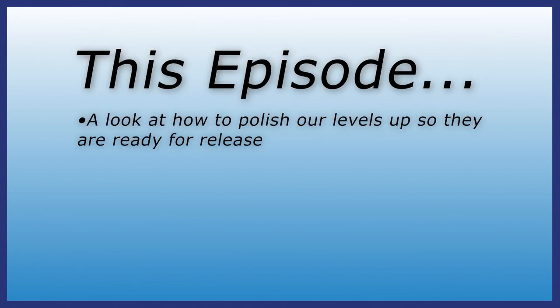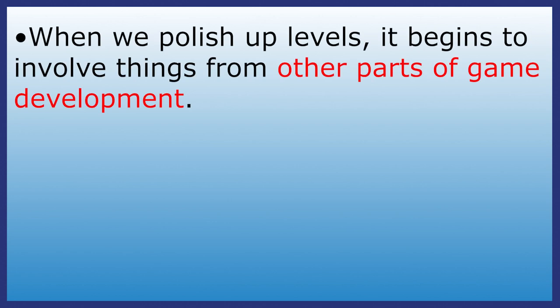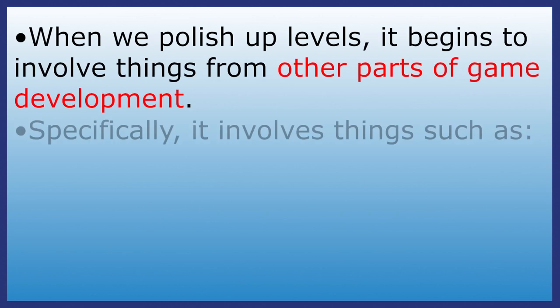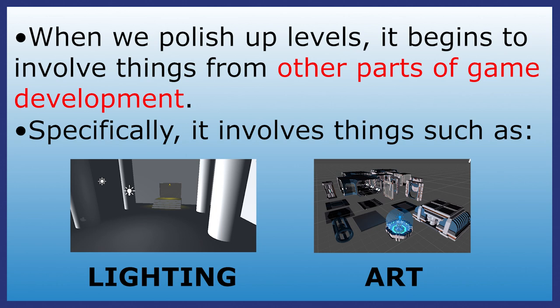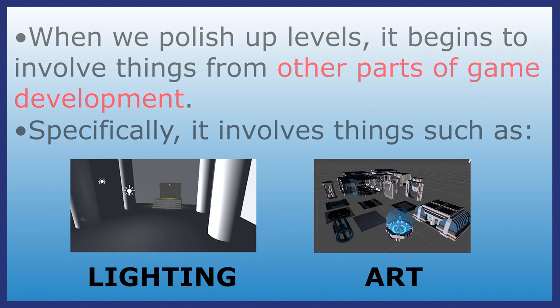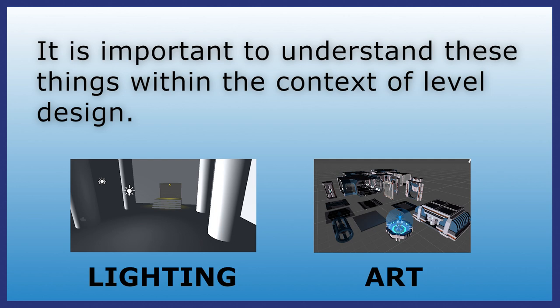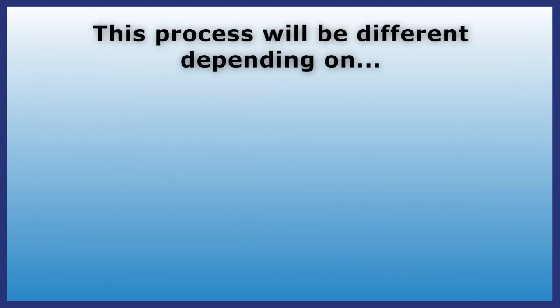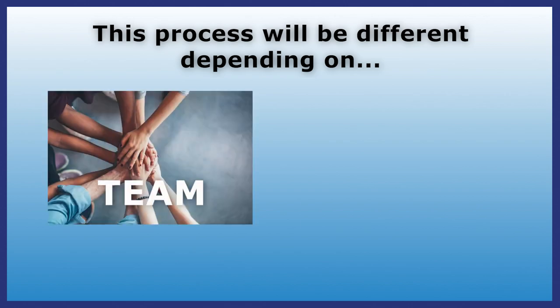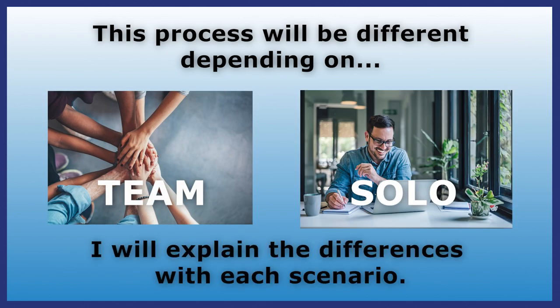Today we're going to look at how we can polish up our levels so they'll look nice, finished, and ready for release. Now there are two things I want to mention before we begin. One, this episode might come off as a bit different from everything else we've talked about up until now. This is because, for this stage of the process, it begins to involve a lot of stuff from other aspects of game design, including lighting and art. Since this series is meant to be focused strictly on level design concepts, I'm going to try and avoid making this episode a full-on tutorial for these subjects, but because of how important they are for level design, I thought it would be a good idea to talk about them. And second, this is going to play out pretty differently depending on whether you're working on a team or on a solo project. I'll talk about the differences in what you'll need to do in either scenario.